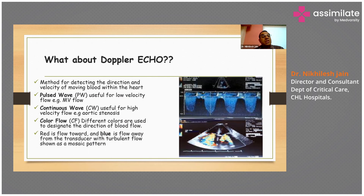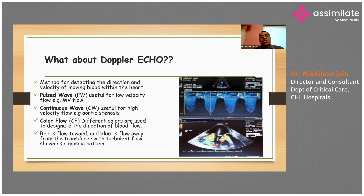Doppler echo is a method for detecting the direction and velocity of moving blood within the heart. Pulsed wave Doppler is useful for low velocity flow, such as at the mitral valve. Continuous wave Doppler is useful for high velocity flow, such as aortic stenosis. Colour flow Doppler can be used to designate the direction of blood flow — red indicates flow towards the transducer and blue indicates flow away from the transducer, with turbulent flow seen as a mosaic pattern.